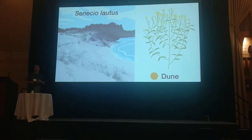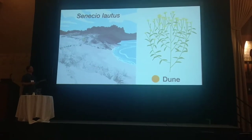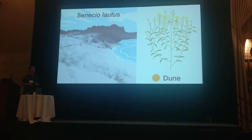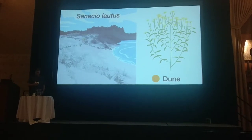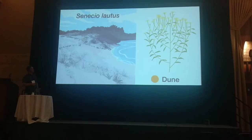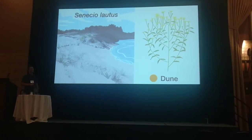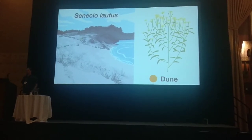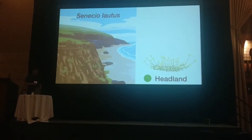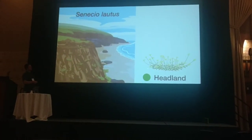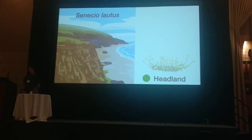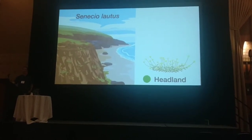Senecio-Lotus is a very diverse complex that occurs along the coast of Australia, the alpine region of Australia, and many other environments, and we are going to focus on the coastal level. This is the sand dunes where this particular ecotype occurs — it's tall, branched, and not so resistant to stress. Whereas the headland type is short or prostrate, and lives on rocky headlands exposed to western winds, salt, and high levels of stress.